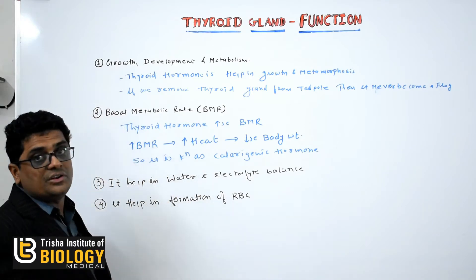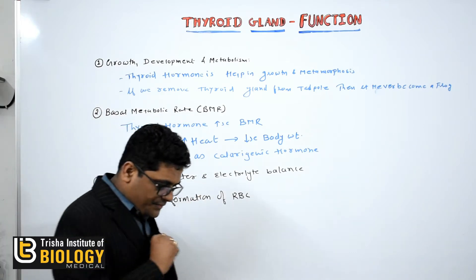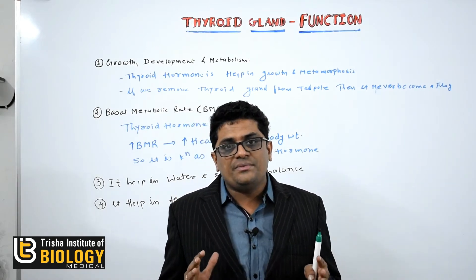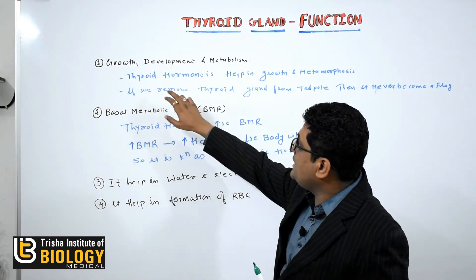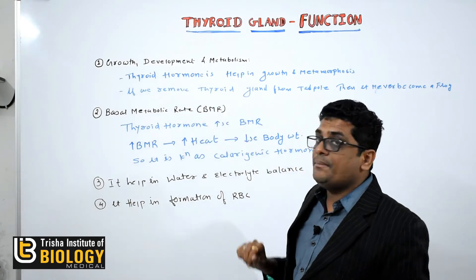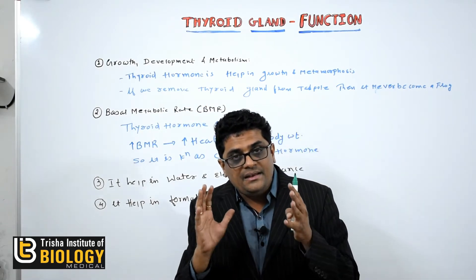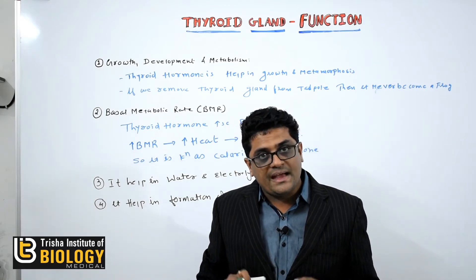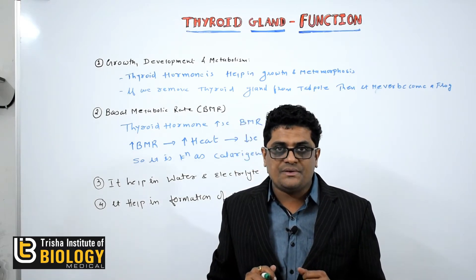So what are the functions of thyroid hormone? The main functions of the thyroid hormone are growth, development and metabolism. The thyroid hormone is responsible for the normal growth of the body as well as development and metamorphism. For an example,